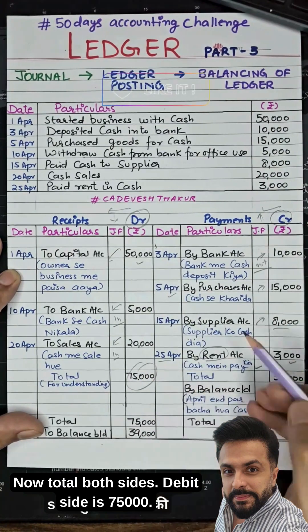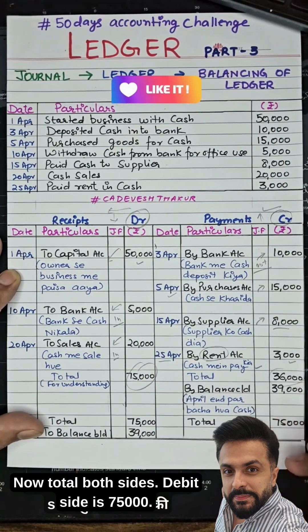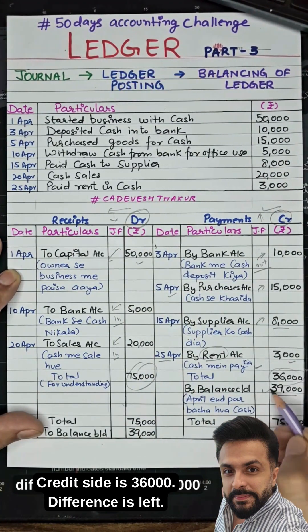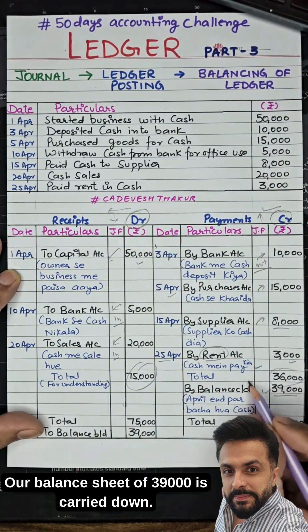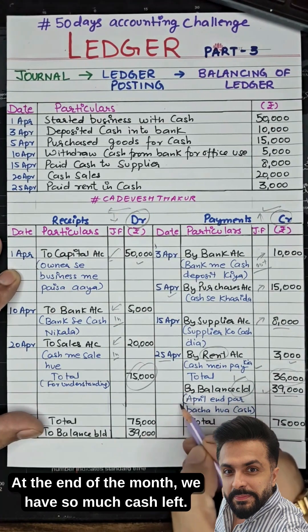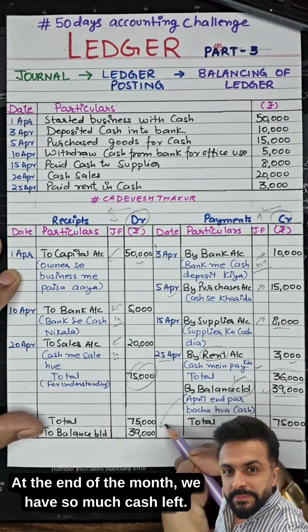Now total both sides. The debit side totals RS75,000 and the credit side totals RS36,000. The difference is the closing balance — RS39,000. At the end of the month, this is how much cash is left in the business.